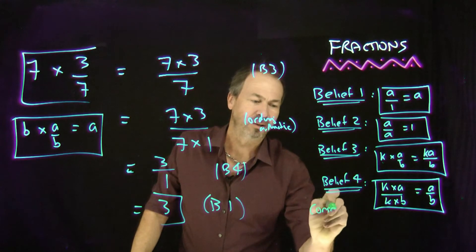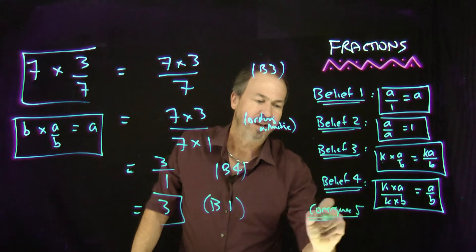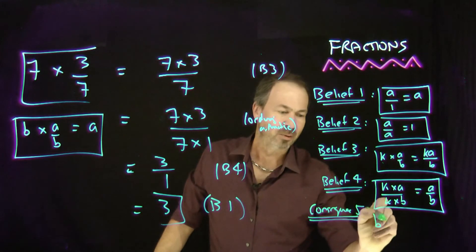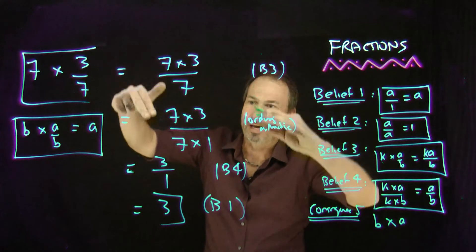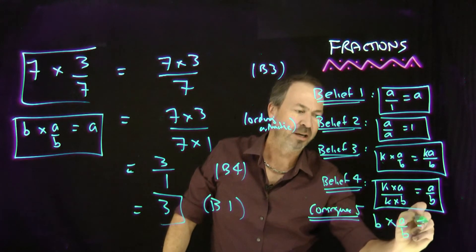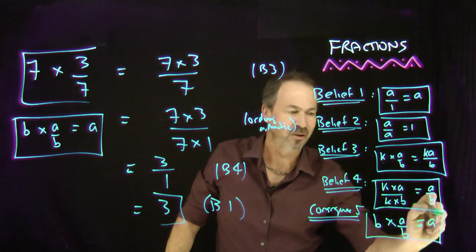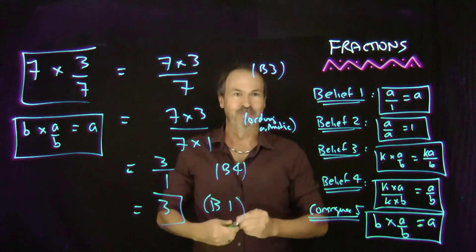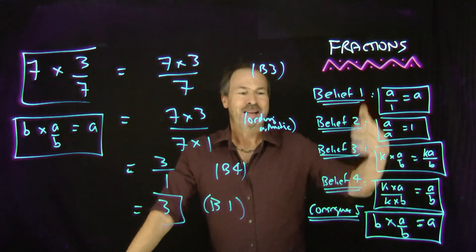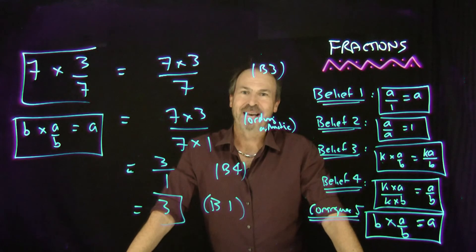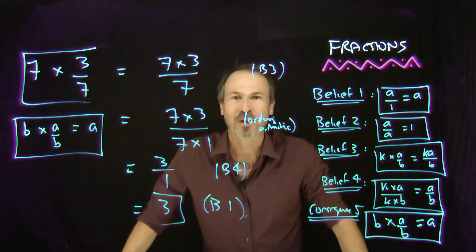Consequence number five. And the reason I'm putting it down is so that we never have to do all this work again. Now we know it's true, we can just use it. We can just use it, which is fabulous. There it is. Beautiful! Now we have our five basic beliefs of fractions under our hand. This is wonderful.